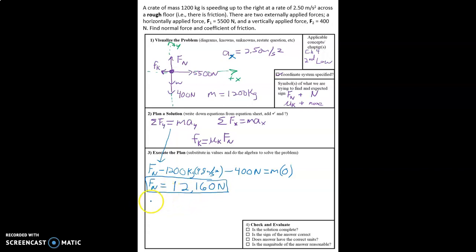Next up I'm going to take the second law equation in the x direction. So in the x direction I have 5,500 newtons minus f_k equals 1200 kilograms times positive 2.50 meters per second squared. And that's the a_x as I just talked about a moment ago.